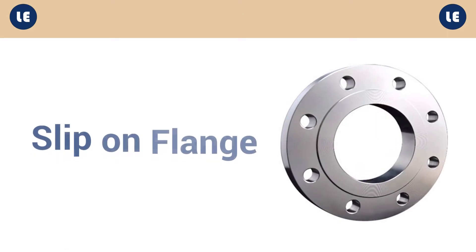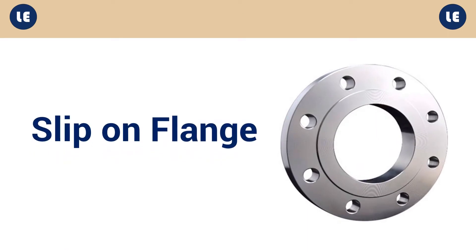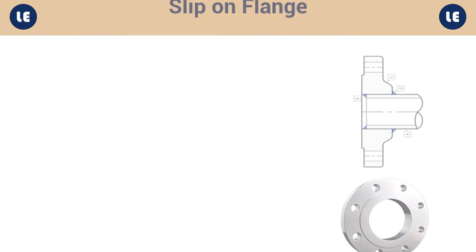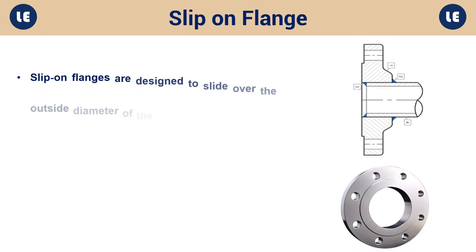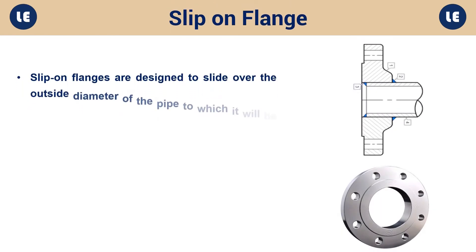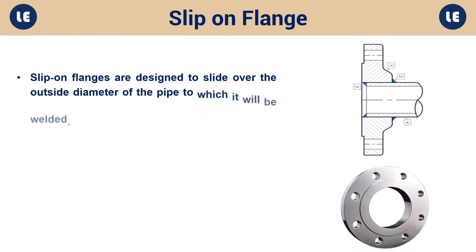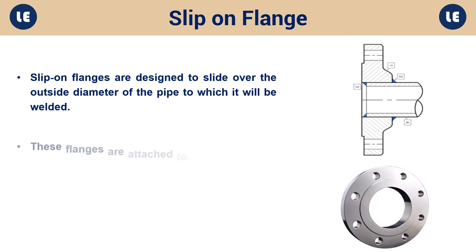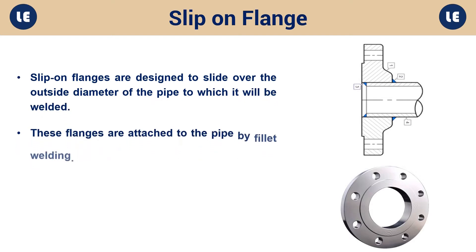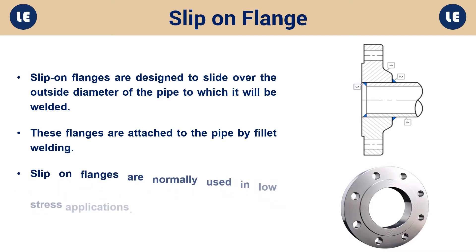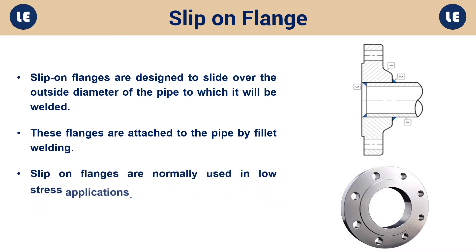Slip-on flanges are designed to slide over the outside diameter of the pipe to which it will be welded. These flanges are attached to the pipe by fillet welding. Slip-on flanges are normally used in low-stress applications.